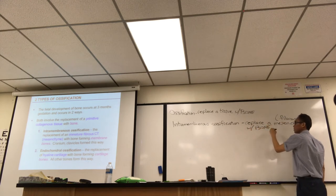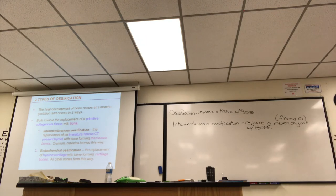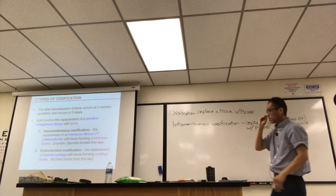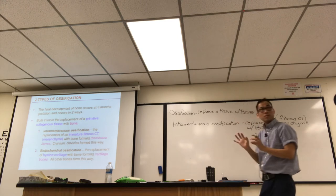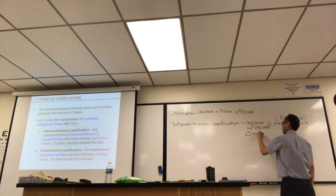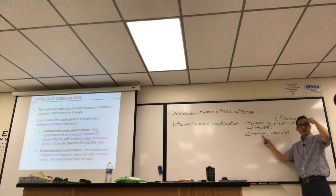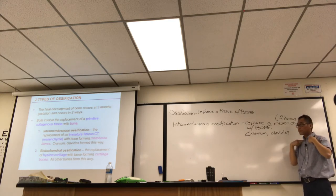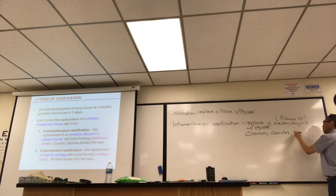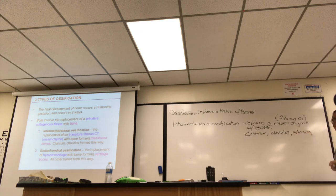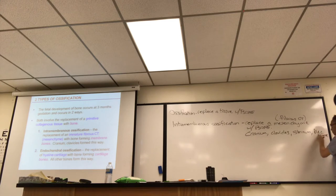Intramembranous ossification occurs within layers of membrane — bone shows up between layers of membrane, literally from within. Only certain bones do this: cranium, clavicles, sternum, and the iliac bones of the hips — essentially the flat bones. Pretty much the rest of the bones undergo endochondral ossification. 'Chondral' means cartilage, and 'endo' means within — it means within cartilage, replacing hyaline cartilage.